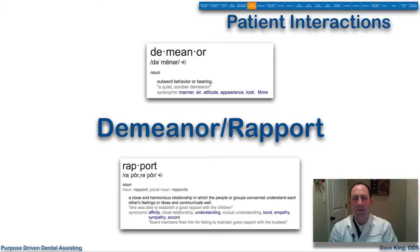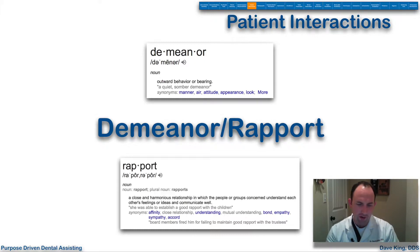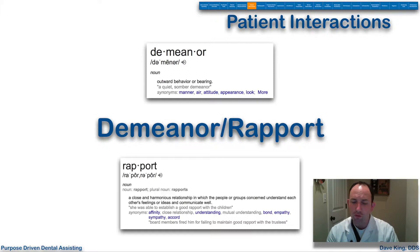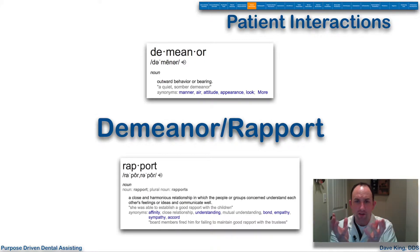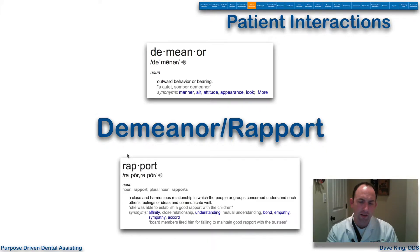Let's talk about these two words: demeanor and rapport. As a dental assistant and member of the dental team, it's critical that we have appropriate demeanor — that is how we maintain ourselves, our comportment, our outward behavior and bearing which is visible to other individuals. Rapport is a close and harmonious relationship in which people understand each other's feelings or ideas and communicate well. We want that rapport within the dental office team, built on a solid demeanor.